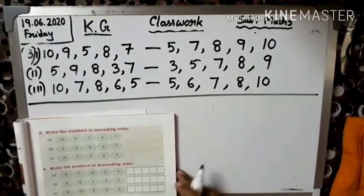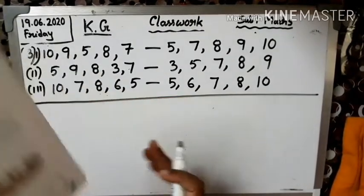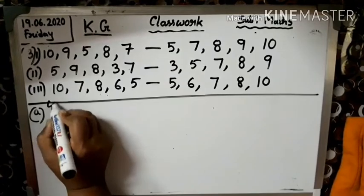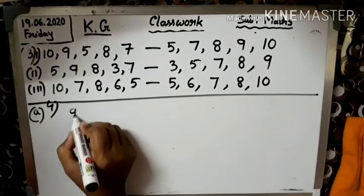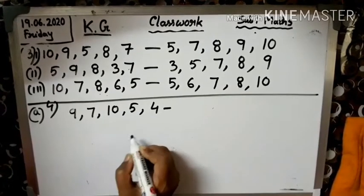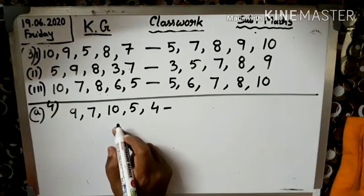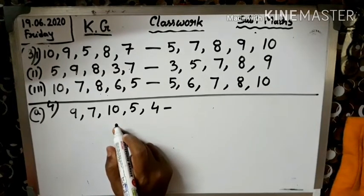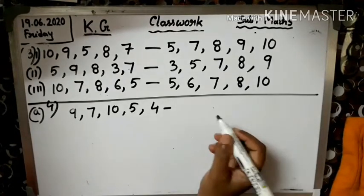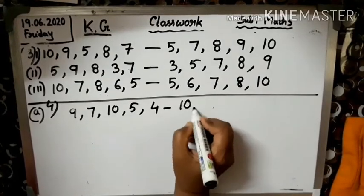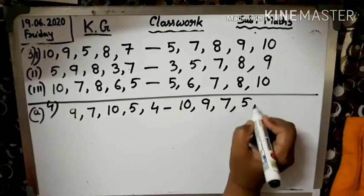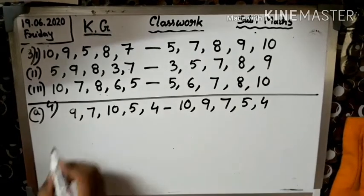Number 4, write the descending order. Descending order means biggest number to smallest number. 9, 7, 10, 5, 4. Biggest number 10 hai. Humne pehle hi bola tha: 10, 9, 8, 7, 6, 5, 4, 3, 2, 1, 0. This is the same, you should learn a lot, speed hona chahiye. Thik hai? 10, 9, 8 nahi hai, 7, 6 nahi hai, 5, 4, aur toh nahi hai.